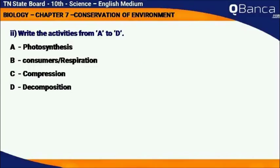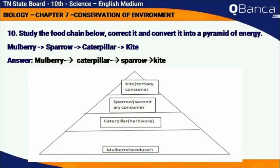Study the food diagram below. Correct it and convert it into a pyramid of energy. Mulberry, Sparrow, Caterpillar, Kite. Answer: Mulberry is a producer, Caterpillar is a herbivore, Sparrow is a secondary consumer, and Kite is a tertiary consumer.